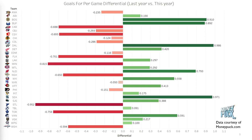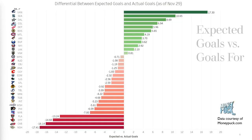If you want access to these visualizations, you can go to the Patreon link in the description for just $3 a month to refer to them regularly and make more informed decisions about your waiver adds and trade offers. One key use for these charts is projecting forward what might happen in the future — and the best predictor I've found for that purpose is the next chart. What we have here is team expected goals versus actual goals for. Some potent offenses just aren't finishing right now and are potentially about to break out with a bit more puck luck.